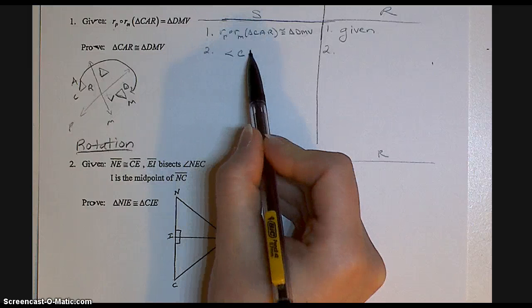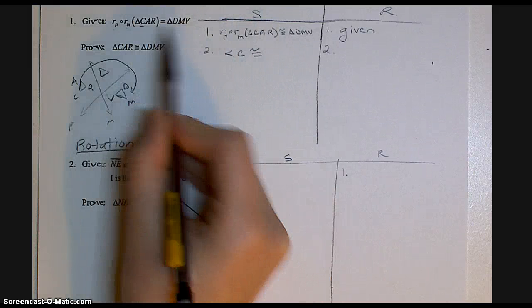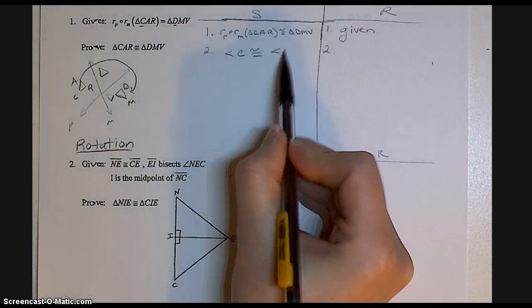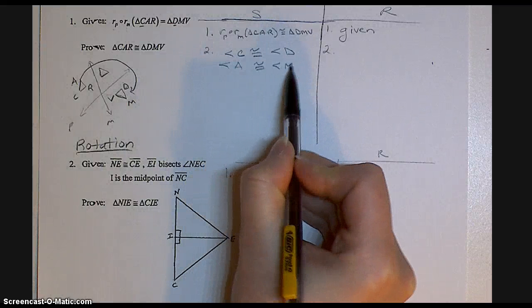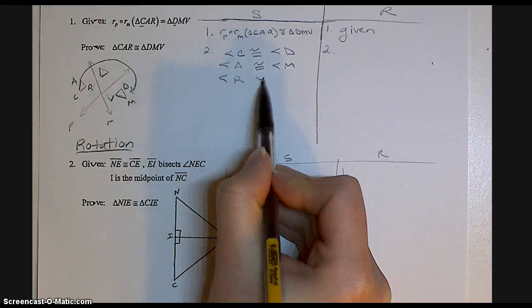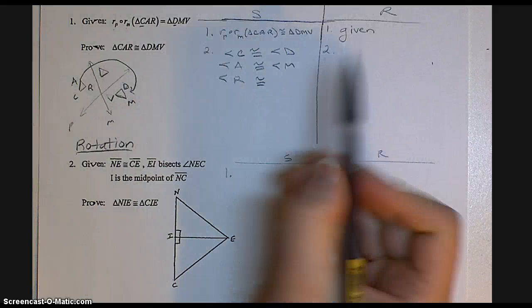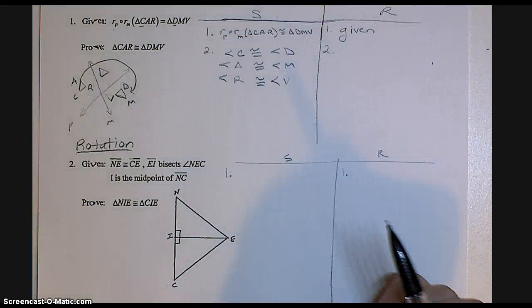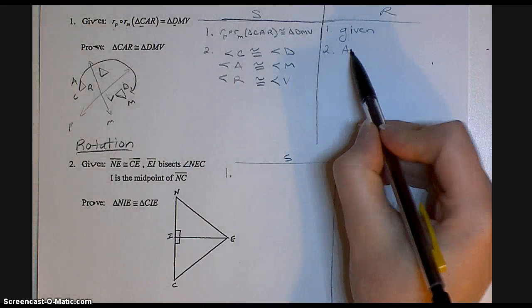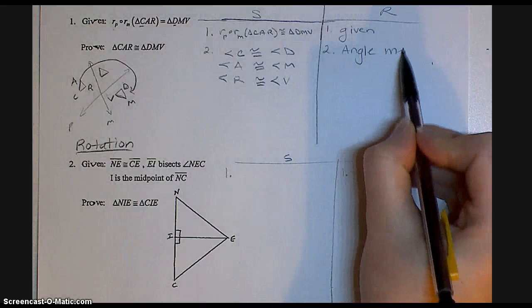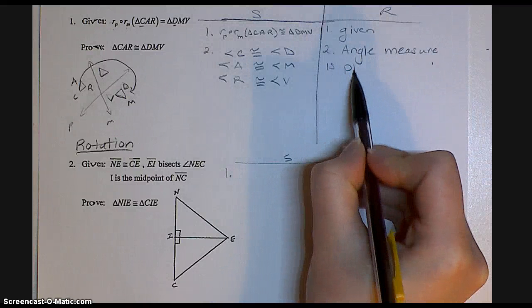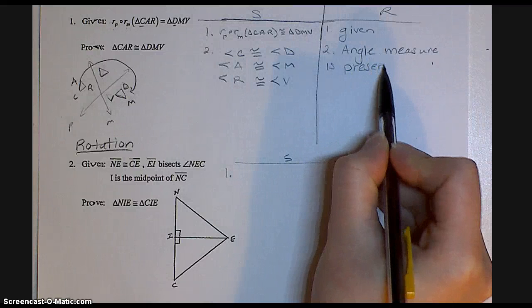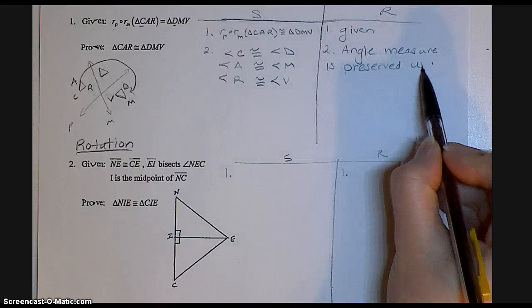You're just going to list out all your corresponding sides. So I'm going to start with angles. Angle C, because it's first, corresponds with angle D. Angle A congruent to angle M. And angle R would be congruent to angle V.